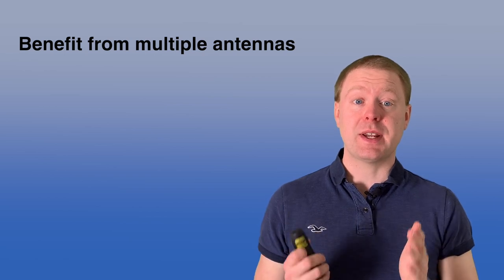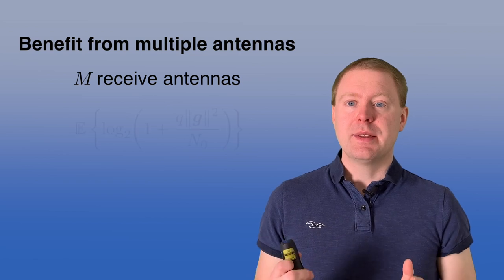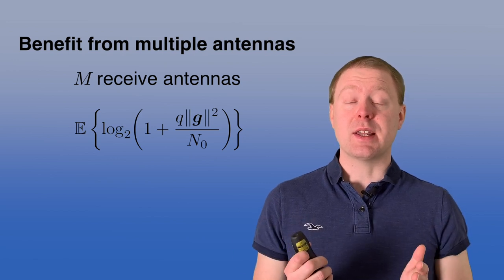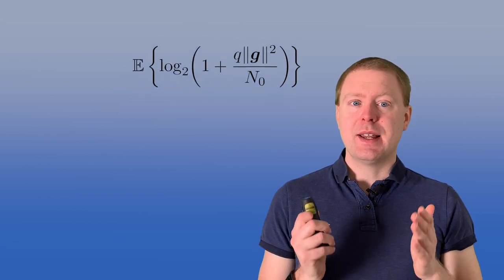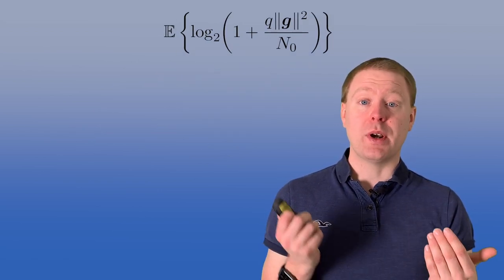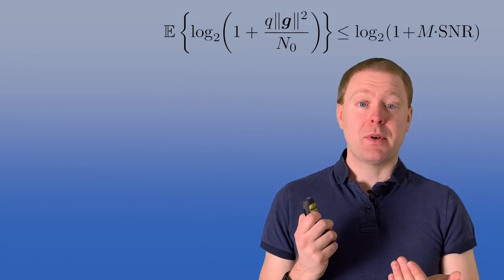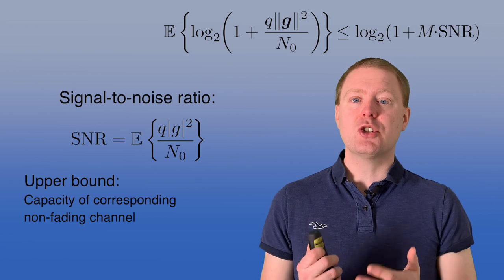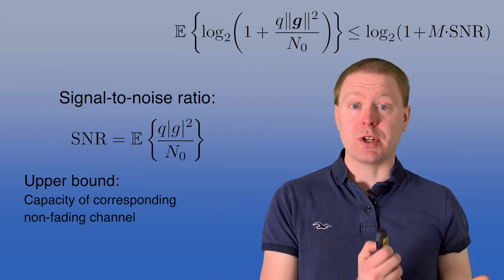Just as in the slow fading case, we can benefit from having multiple receive antennas in the fast fading case. Say we have M receive antennas and one transmit antenna in a SIMO system — then the ergodic capacity becomes the expected value of log₂ of 1 plus an SNR that contains the norm squared of the channel. An upper bound is log₂ of 1 plus M times the SNR per antenna, which is the capacity of a non-fading channel. This shows that IID Rayleigh fading — or any fading distribution — can never beat the corresponding non-fading case.